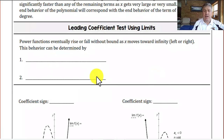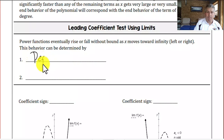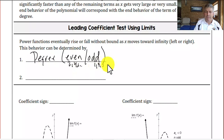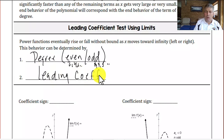The leading coefficient test tells us that the end behavior can be determined by the degree — whether it's even or odd. So whether the degree is an even number like 2, 4, 6, etc., or an odd number, 1, 3, 5, etc. This also depends on the leading coefficient, or the highest-degree coefficient in our polynomial.